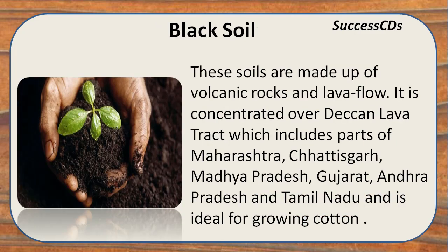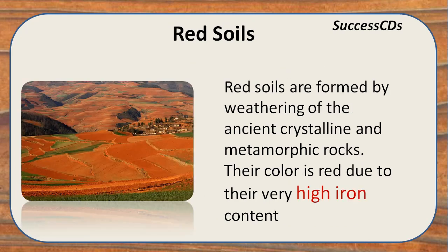Black soil is made up of volcanic lava and is ideal for growing cotton. It is mainly found in parts of Maharashtra, Chhattisgarh, Madhya Pradesh, Gujarat, Andhra Pradesh, and Tamil Nadu.